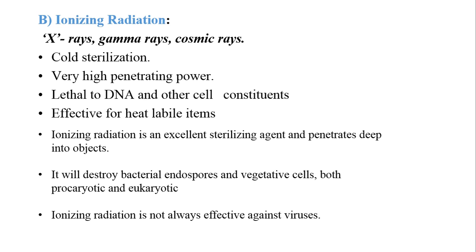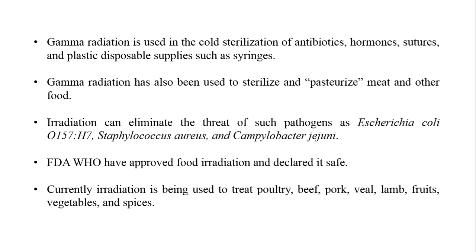Ionizing radiation is an excellent sterilizing agent that penetrates deep into objects. It destroys both bacterial endospores and vegetative cells — both prokaryotic and eukaryotic — giving it a wide range of effectiveness. However, it is not always effective against viruses. Gamma radiation is used for cold sterilization of antibiotics, hormones, plastic disposables, and various other items, and has also been used to irradiate and pasteurize meat and other food items.